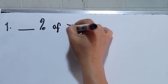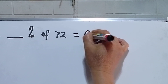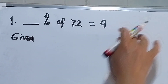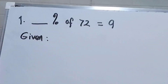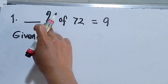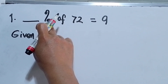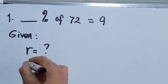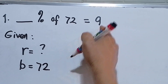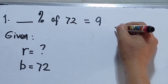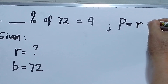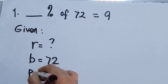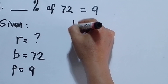Example number one: blank percent of 72 is equal to 9. We have to write the given before we solve. The unknown is R because there is a percent symbol, 72 is your base, and P equals 9 from the formula P equals R times B.